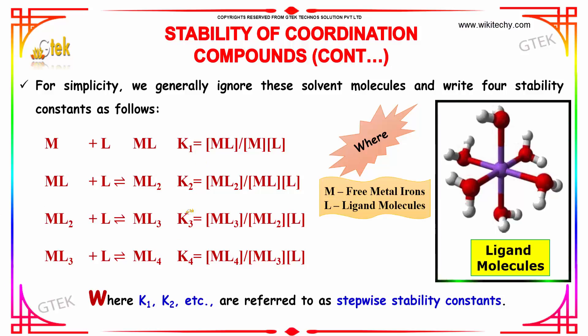Where K1, K2, K3 and K4 are the stability constants. If I want to calculate the stability constants: K1 = ML divided by M and L. K2 = ML2 divided by ML into L. K3 = ML3 divided by ML2 into L. And K4 = ML4 divided by ML3 into L.